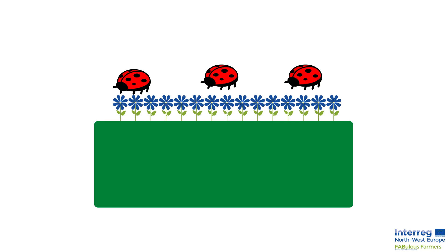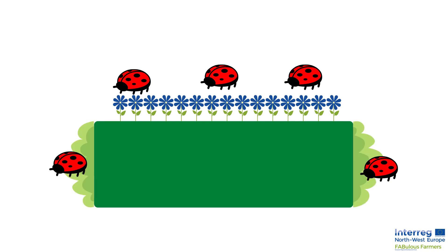If this farmer also places hedgerows next to his field — of course, with a well-considered choice of species — these can provide habitat during winter to the beneficial insects he attracts with the flower strips.